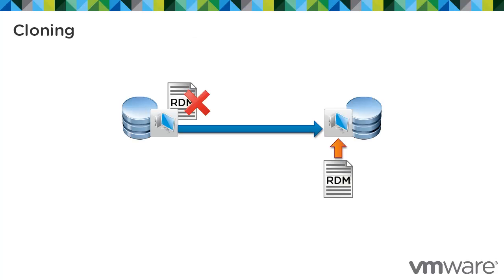If you want to clone a virtual machine without its RDMs, remove them from the configuration of the virtual machine before migrating. You can delete the RDM from the disk when removing it — the raw LUN contents are not changed, only the RDM mapping file is deleted. Re-add them to the configuration when completed.